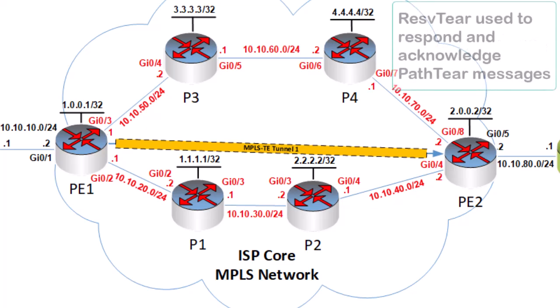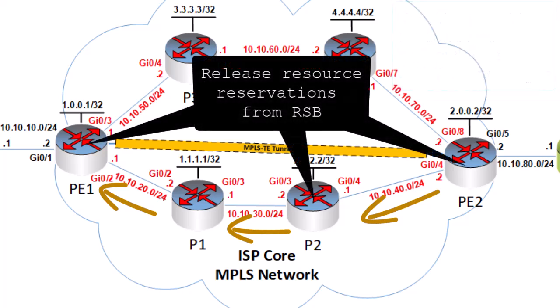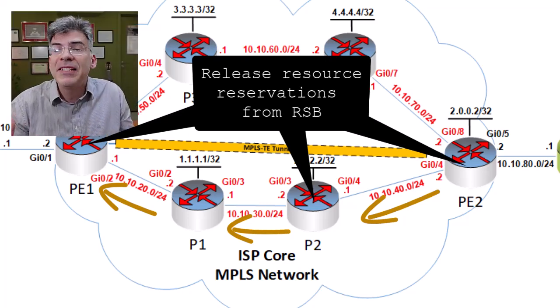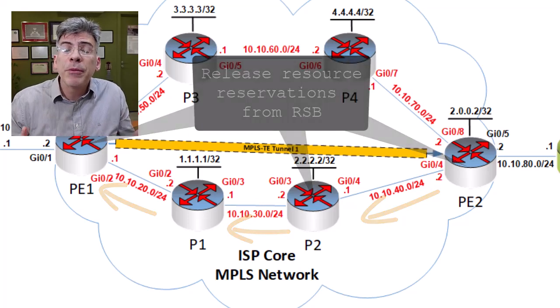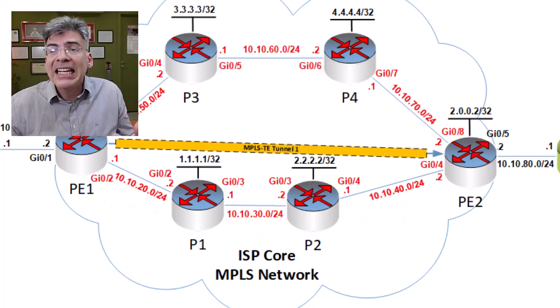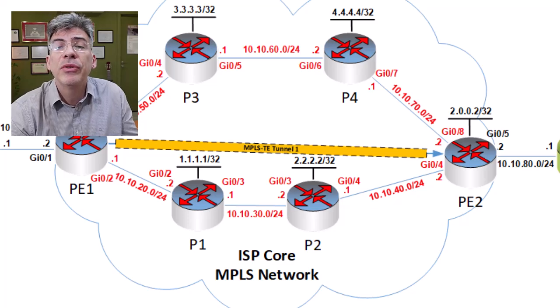The reserve tear message is essentially the response to the path tear message. It is generated by the tail end router and travels upstream towards the head end router, following the reverse path of the path tear message. It's used to remove the reservation state, and each router along the path ensures that the RSB is updated accordingly. So you can see RSVP uses all of these messages to create, maintain, and tear down paths while reserving the appropriate amounts of bandwidth at each interface along the way — giving you a guaranteed path as well as guaranteed resources for that path between the head end and tail end router.